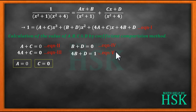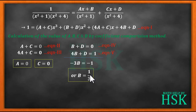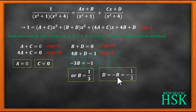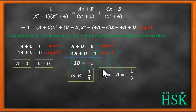Taking equations 4 and 5 and subtracting: the d terms cancel, giving 3b = −1, so b = 1/3. From equation 4, d = −b = −1/3. Now we place the values a = 0, c = 0, b = 1/3, d = −1/3 into the partial fraction expression.